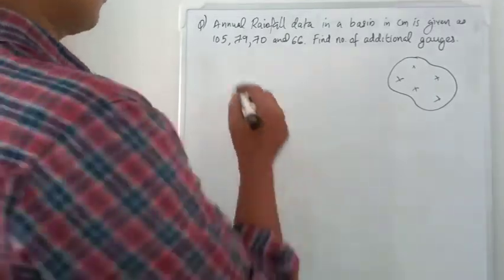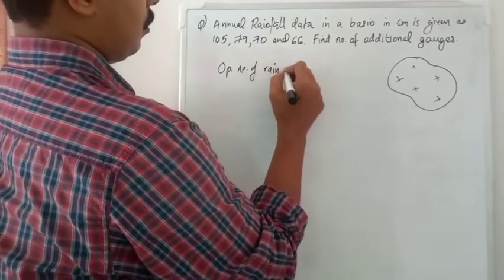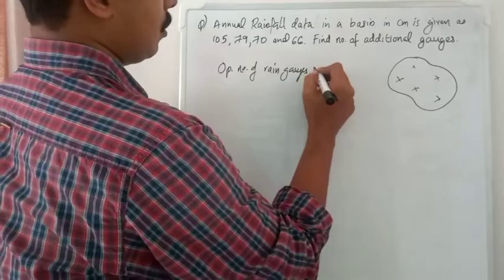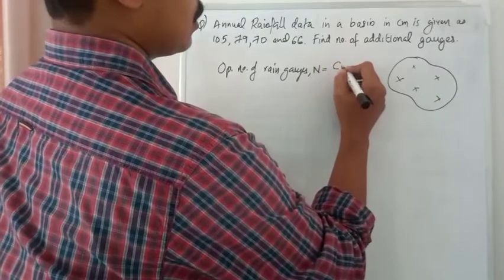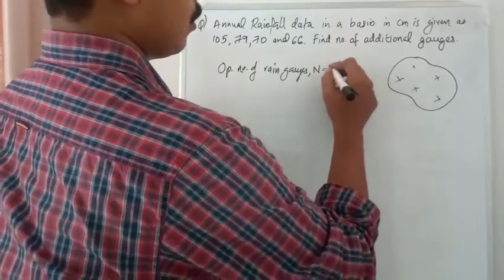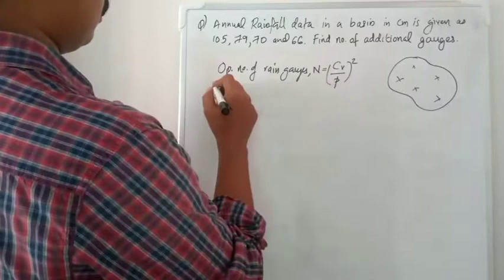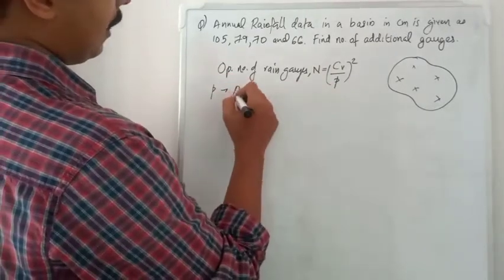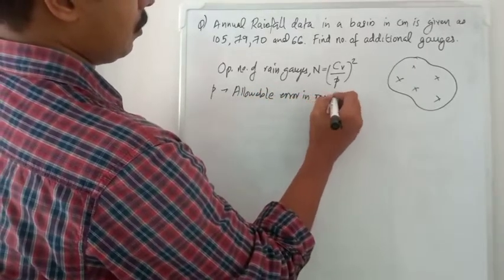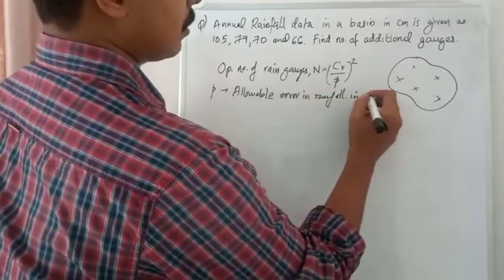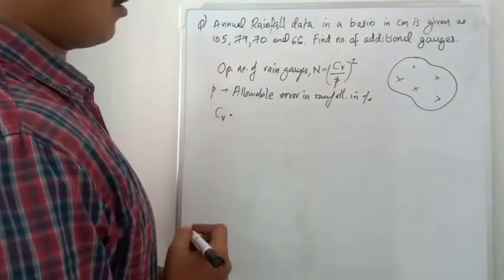To find the optimum number of rain gauges, the formula is N = (CV/P)², where P is the allowable error in rainfall in percentage — you can substitute the value in percentage itself.